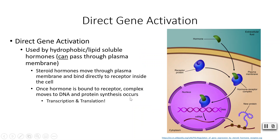Direct gene activation is much simpler. The steroid hormones that use this system can pass directly through the plasma membrane. The receptors are located in the cell itself, either in the cytosol or on the nucleus. Once the hormone binds to the receptor, that whole complex makes its way into the nucleus, finds a particular piece of DNA, and we start the process of protein synthesis — transcription and translation — literally creating new proteins.